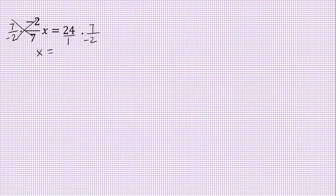And over here, we have an interesting situation where we have a negative 2. I'm going to say negative 2 goes into negative 2 once, and negative 2 goes into 24 negative 12 times. Now multiply what's left and we get x is negative 84. Final answer.